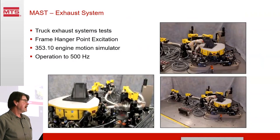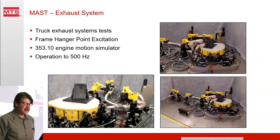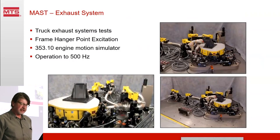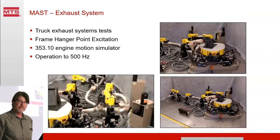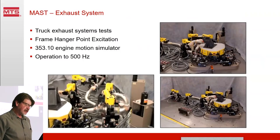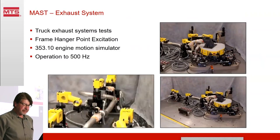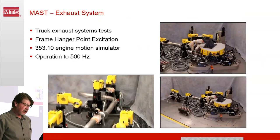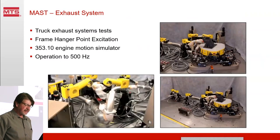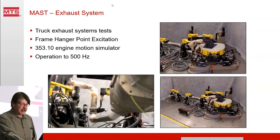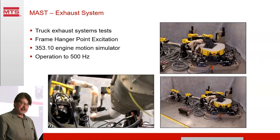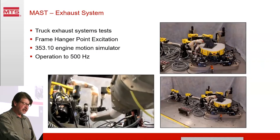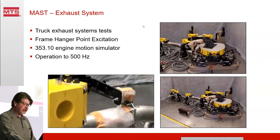Another application of a MAST system is exhaust testing. This is an example of the MTS 35310 500 Hz six-degree-of-freedom shaker table. In this case we're using the shaker table to simulate engine vibration doing a flex and exhaust system test. The engine motion is reproduced by the high-frequency table, and what we call hanger point actuators perform the frame motions that excite the rest of the exhaust system. Once installed at the customer site, hot gas was applied through the exhaust system to keep it at high temperature to simulate the overall fatigue damage environment of a real operating exhaust.